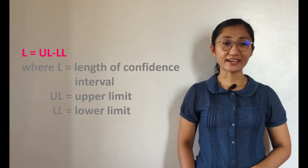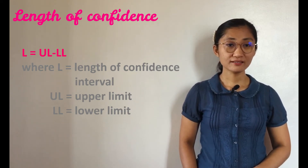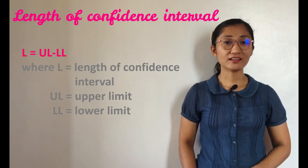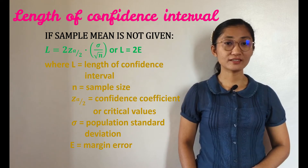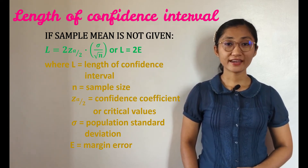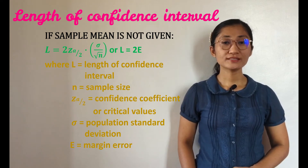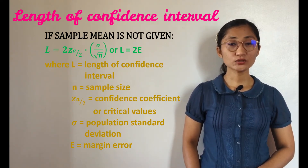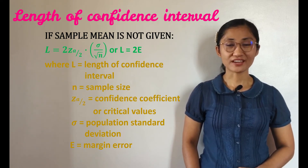To compute for the length of the confidence interval L, we use the formula: L equals UL minus LL. However, if the sample mean is not given, we use the formula L equals 2 times Z sub alpha over 2 times sigma over the square root of n. The length of the confidence interval is also equal to 2 times E, or 2 times the margin of error.